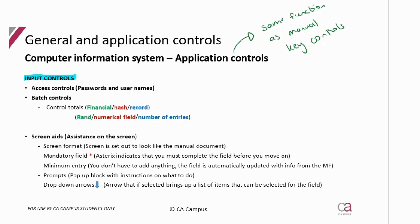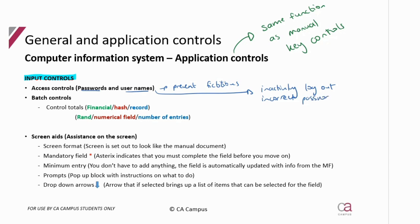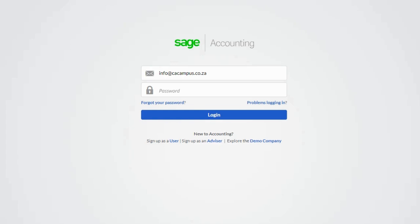Access controls: when you want to log in you have to put in a password and a username, ensuring only the right people gain access. This is to prevent fictitious transactions — if the right people are gaining access, we believe only the right transactions will be input. Remember two key password controls: if there's inactivity it should log you out, and if there are incorrect password attempts it should lock you out — generally after three attempts.